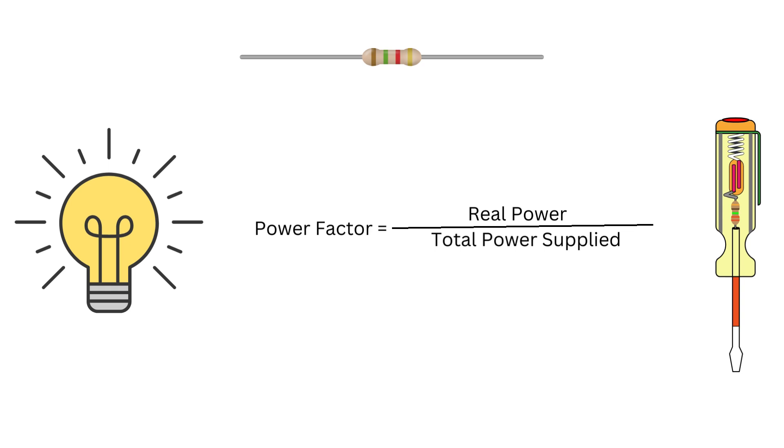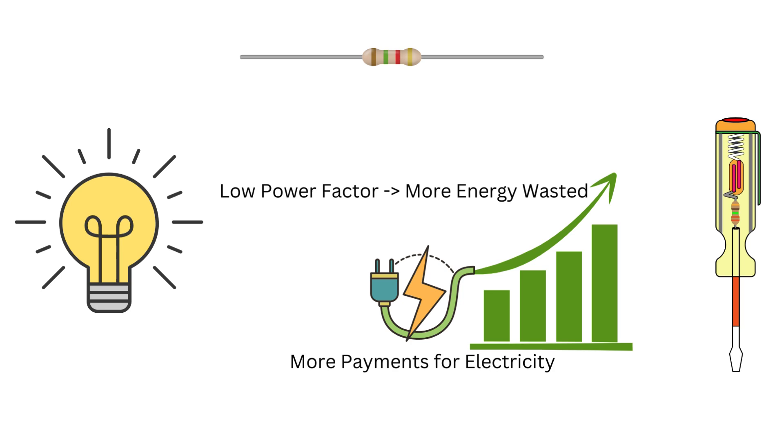Let's see how we calculate power factor. It's actually quite simple. You just divide real power by total power. If your real power is 80 watts and your total power is 100 watts, your power factor is 0.8 or 80 percent.